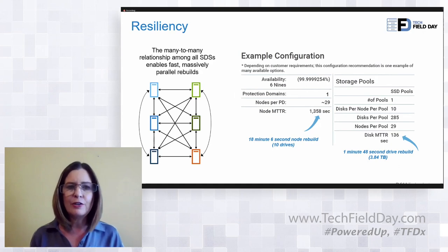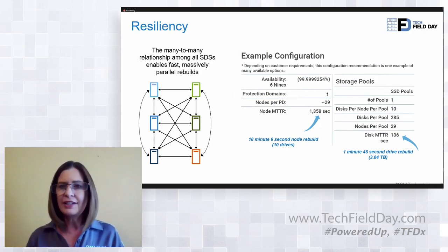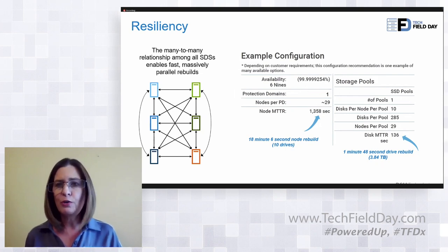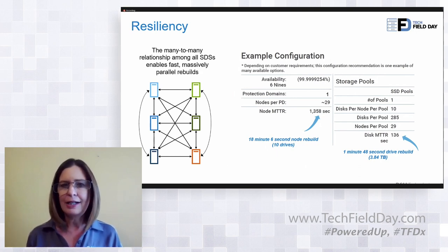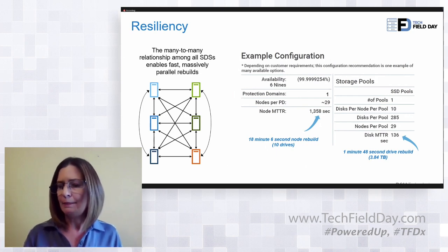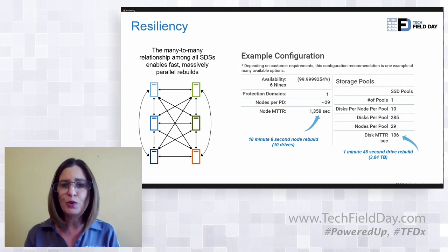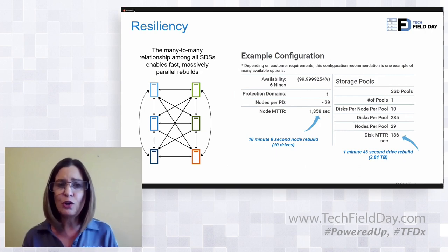When you pull all that storage together you can get a lot of IOPS, and it's good to have extra because all the SDCs and SDSs talking together enables very fast recovery time. If you lose a node or a drive, the system recovers extremely fast. In this example configuration — 29 nodes and 285 disks — if you lose a drive, it recovers in less than two minutes. If you lose the whole node, it's just over 18 minutes. Really fast recovery times.